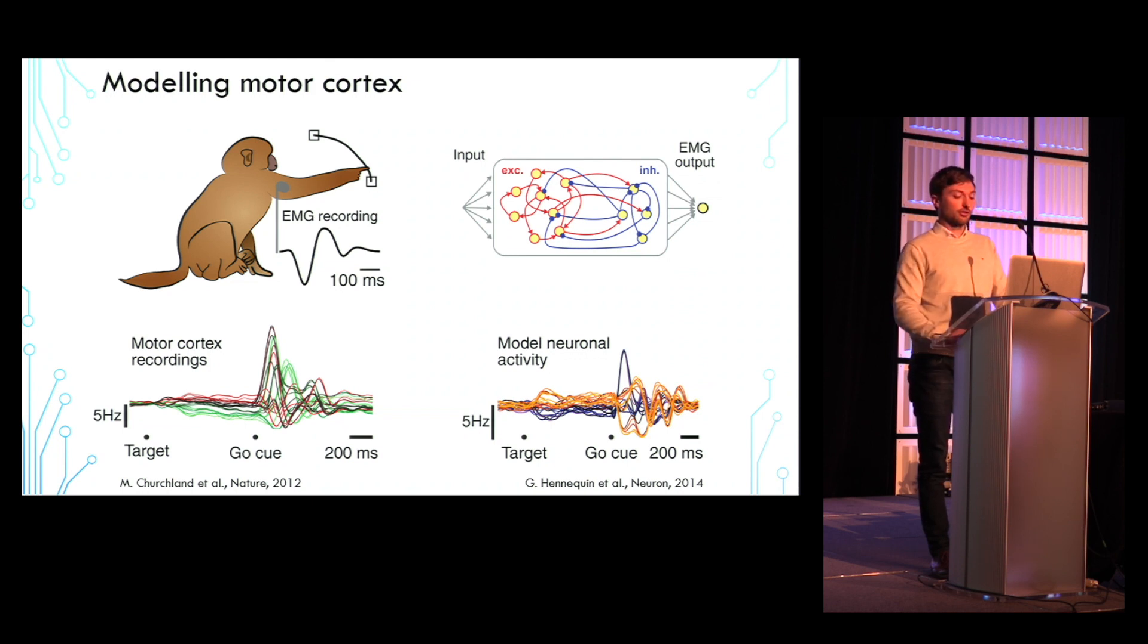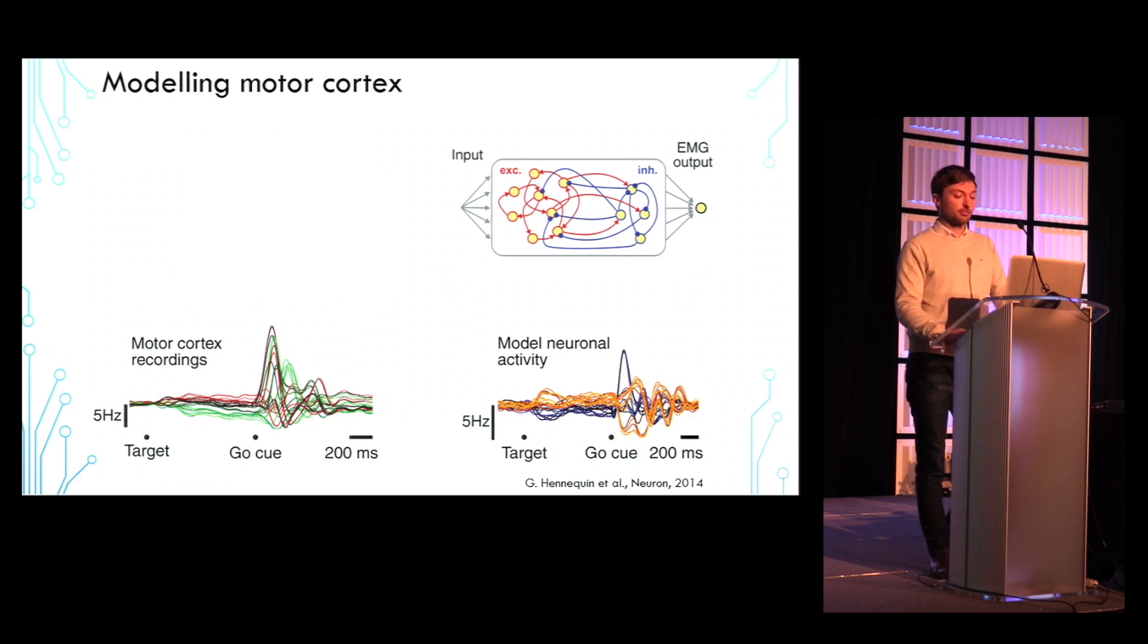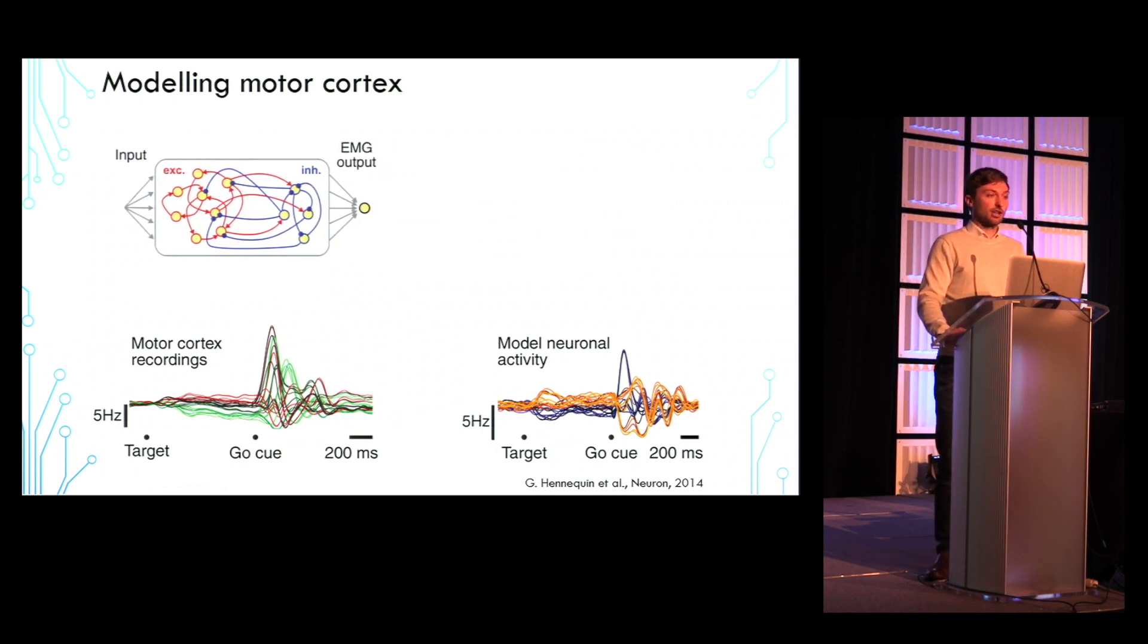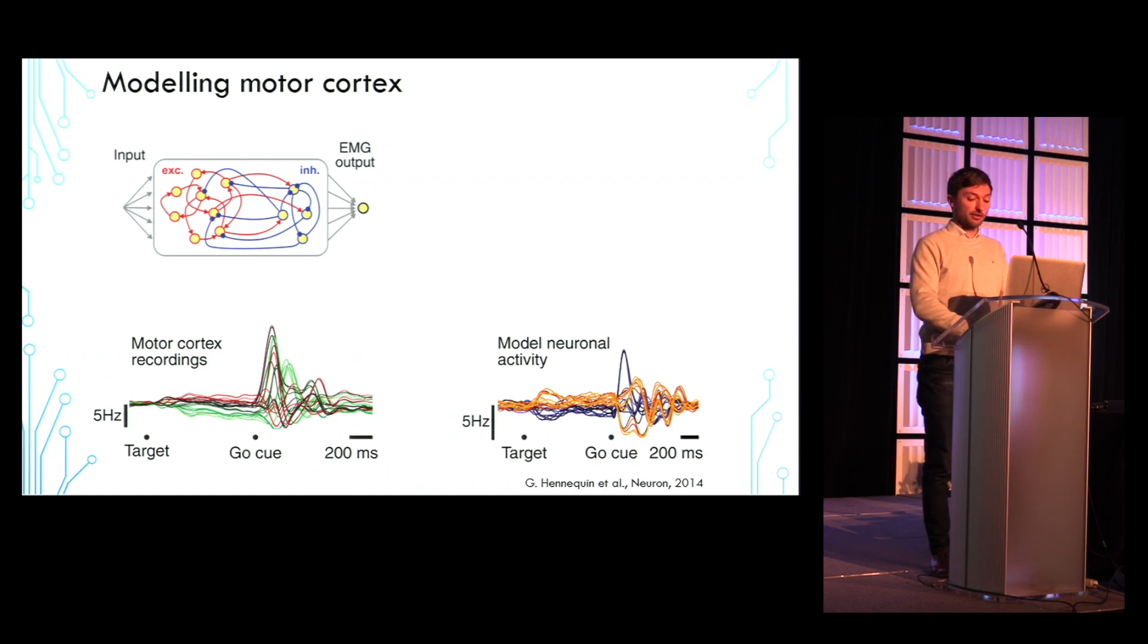To try and answer such questions, we begin with an existing model of motor cortex that incorporates strong excitatory recurrent interactions that are stabilized by feedback inhibition.